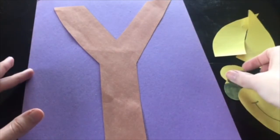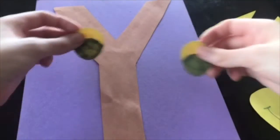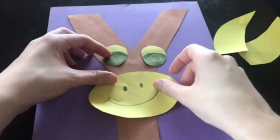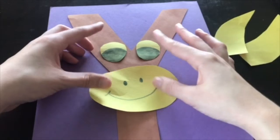Now for the next step, we're going to move on with the face. I'm going to take my two eyes and the snout and glue these to the center of the Y.